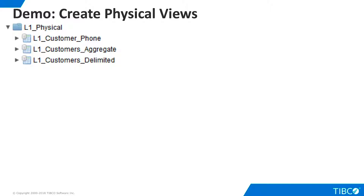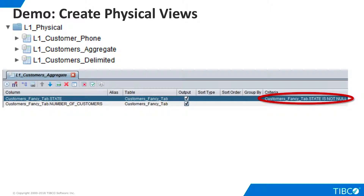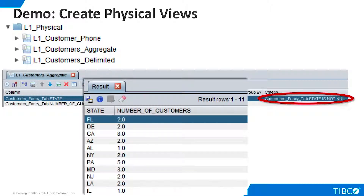This process is straightforward for the delimited and phone tables, but let's take a closer look at the aggregate data table. For this view, we add a criterion on the grid panel that excludes those null rows we encountered earlier. Now when we execute the view, the null rows are not present.